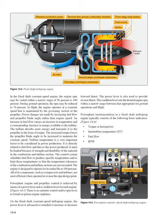Turbine temperature is a very important factor in power production. It is directly related to fuel flow and thus to the power produced, and must be limited because of the strength and durability of materials in the combustion and turbine section. The control system schedules fuel flow to produce specific temperatures and to limit those temperatures so that tolerances are not exceeded. The engine is designed to operate for its entire life at 100%; all components, such as compressors and turbines, are most efficient when operated at or near the RPM design point. Power plant control is achieved by means of a power lever and a condition lever for each engine.